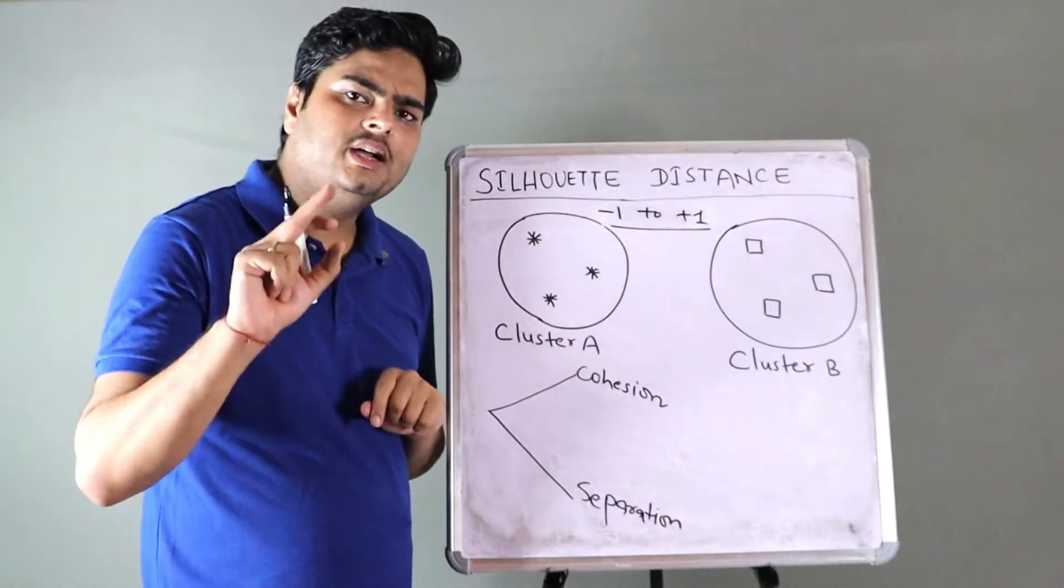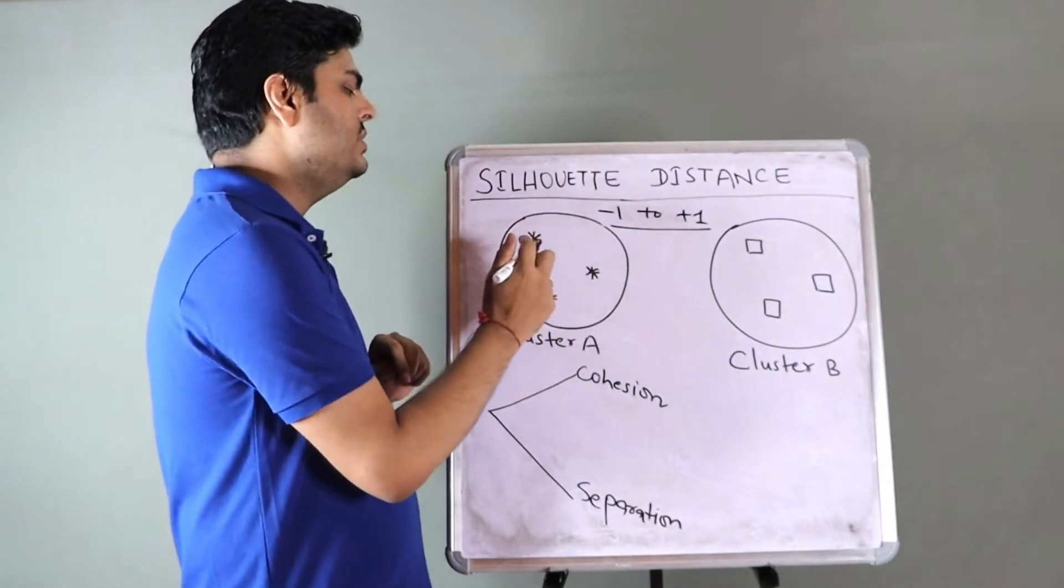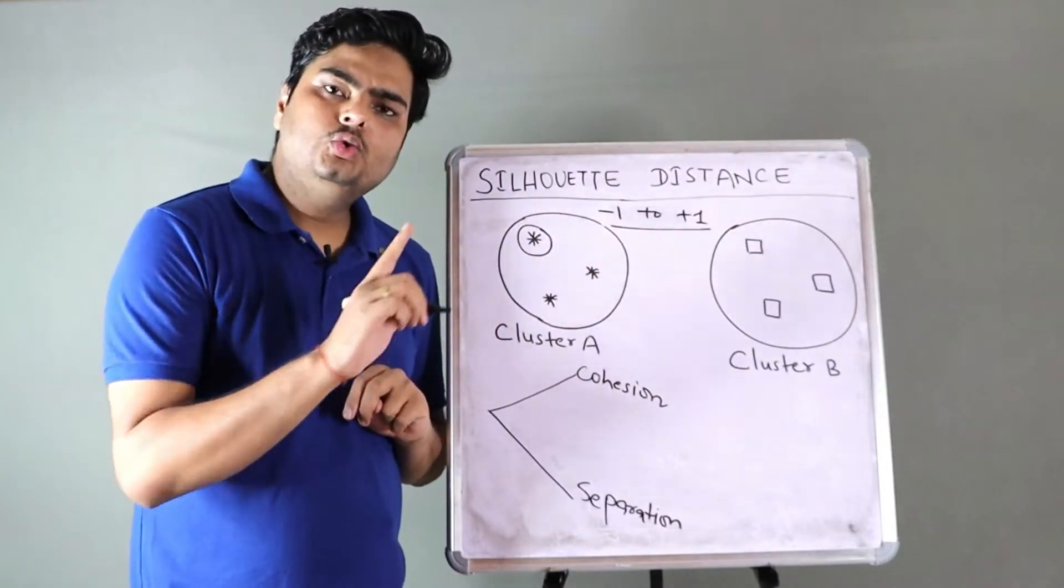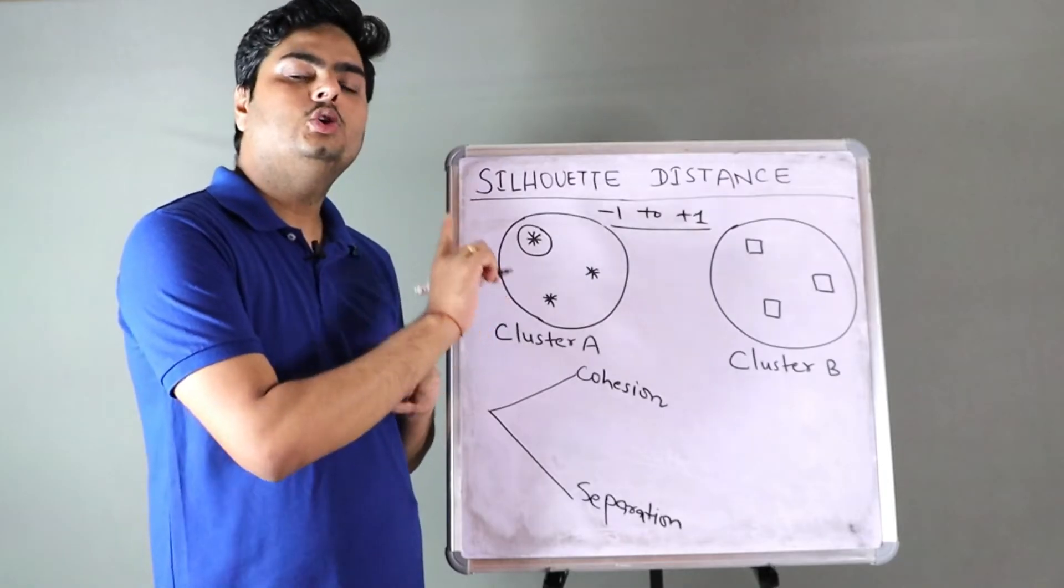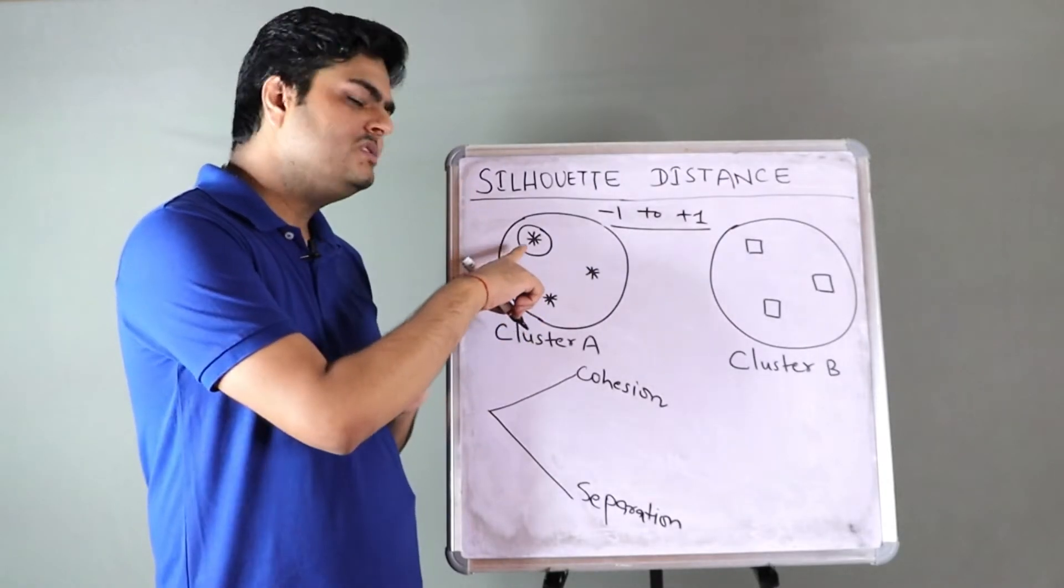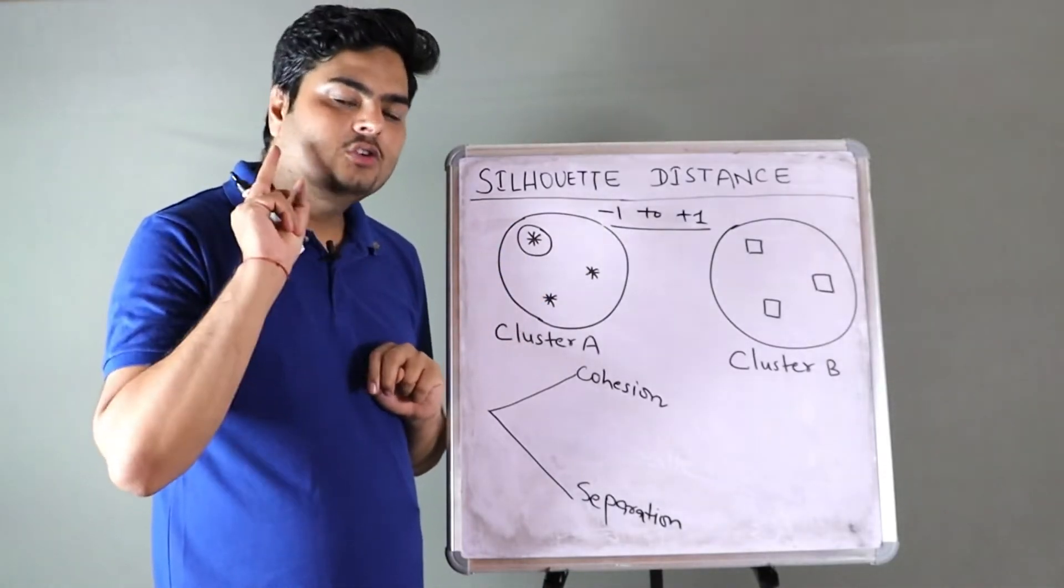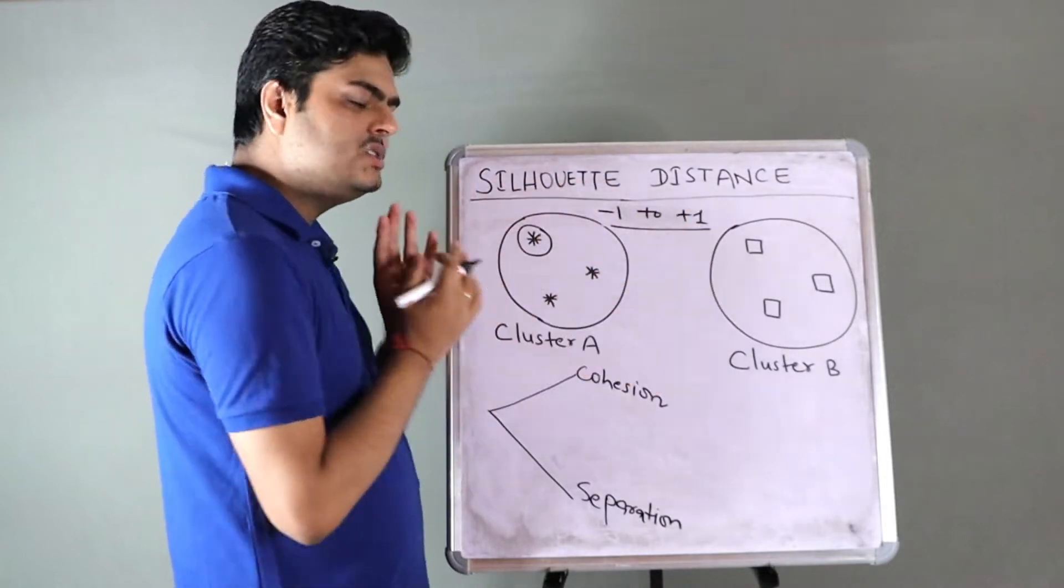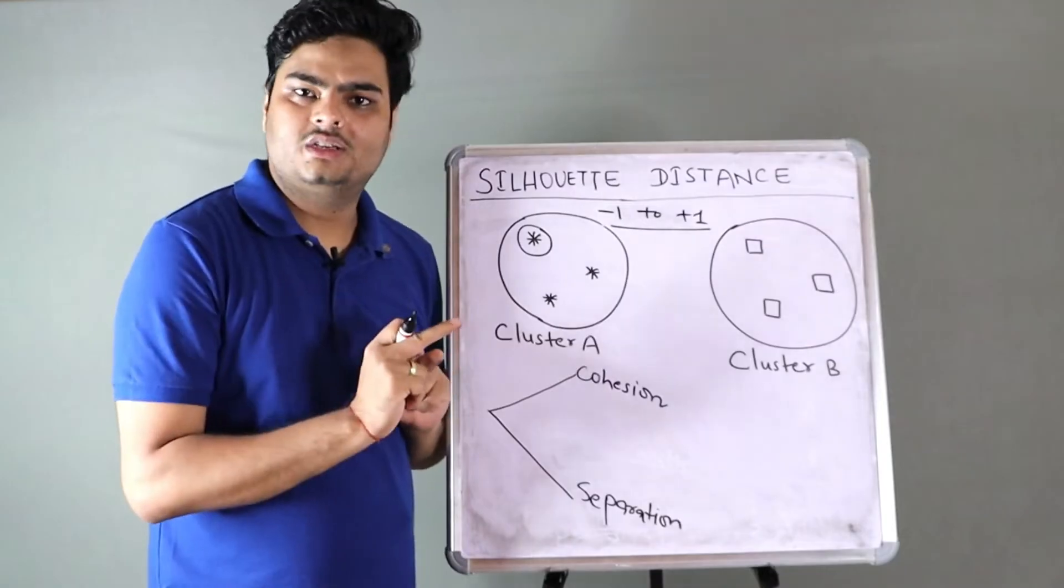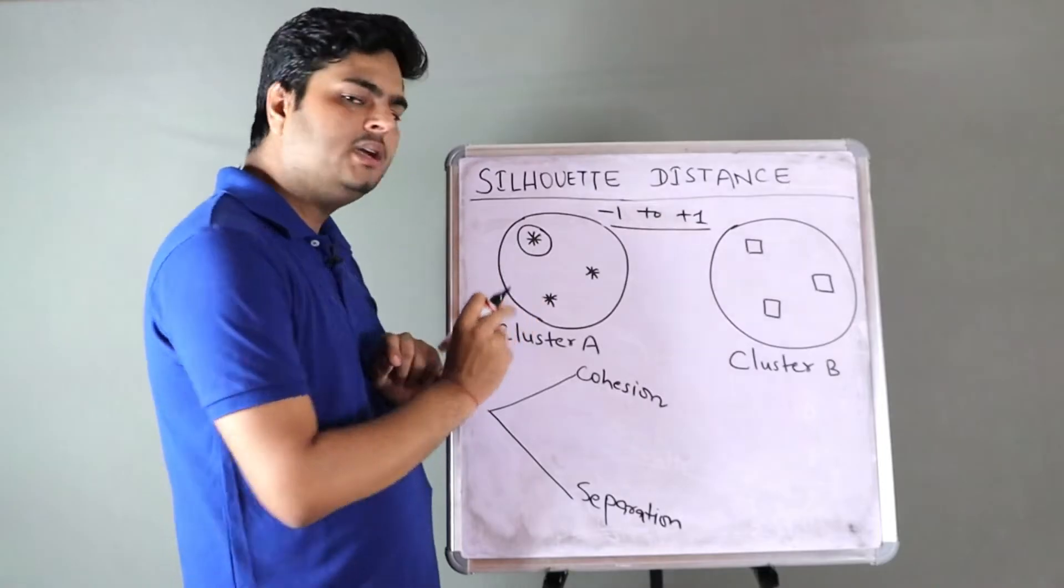Cohesion means these people are similar to each other, and these people should be different from these guys. So separation. Now, using this silhouette coefficient, we measure these two things together. And in the end, we say how good our clusters are formed.